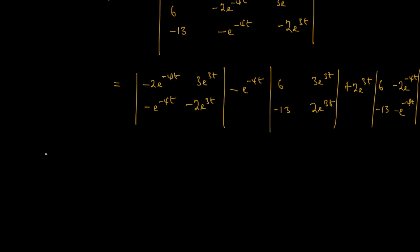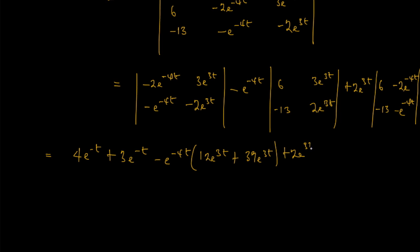Multiplying through: negative 2 times negative 2 gives 4e^(−t), plus 3e^(−t) from the next term. For the second part: negative e^(−4t) into (6 times 2) gives 12e^(3t), then minus and minus gives plus 39e^(3t), then plus 2e^(3t). For the third part: plus 2e^(3t) into negative 6e^(−4t), then minus 26e^(−4t).